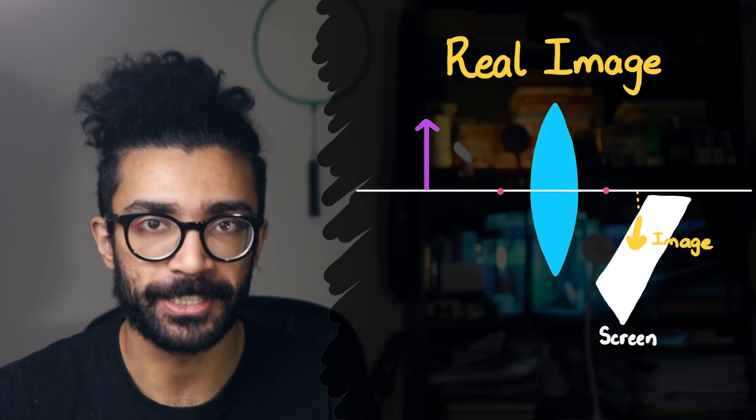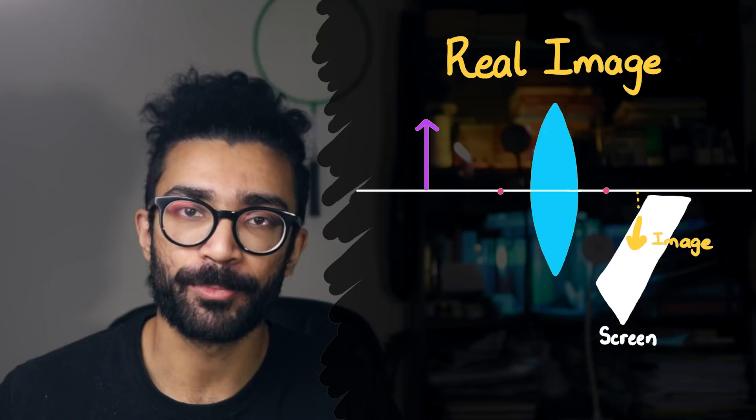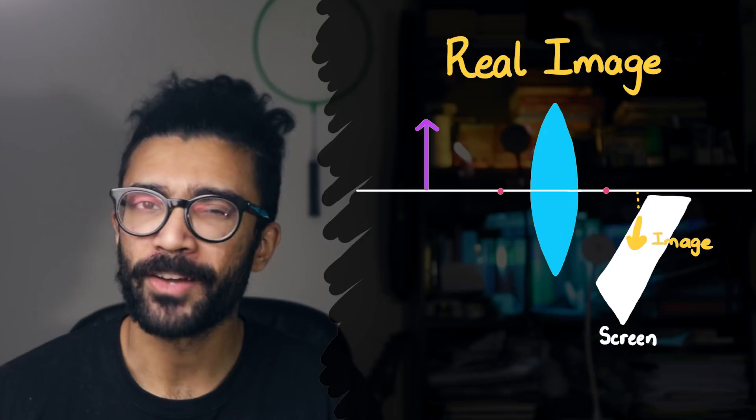So basically, our observer's eye, or a screen placed at this position, would be seeing an upside down image of our object. I think this is pretty logical so far. So let's now move into the realm of virtual images.